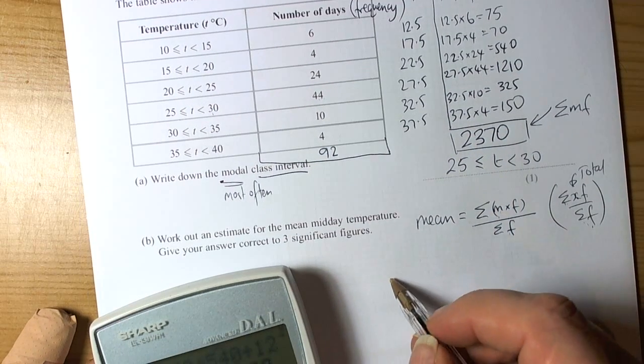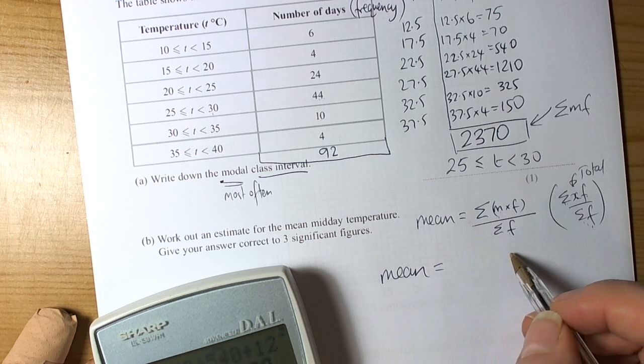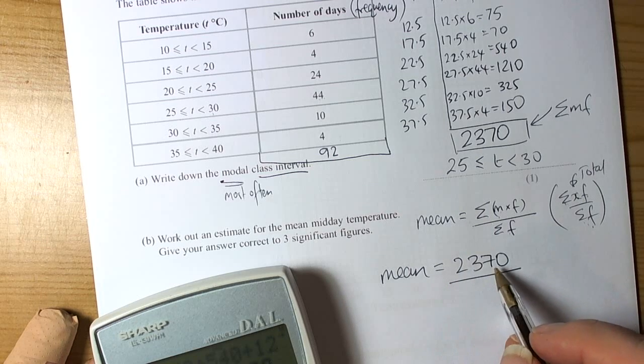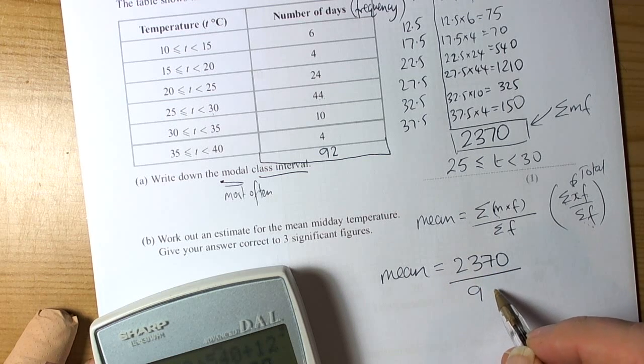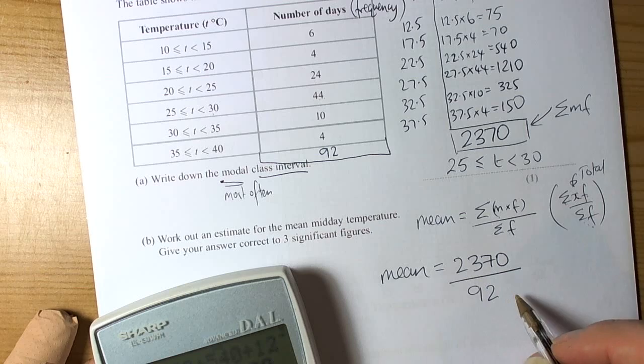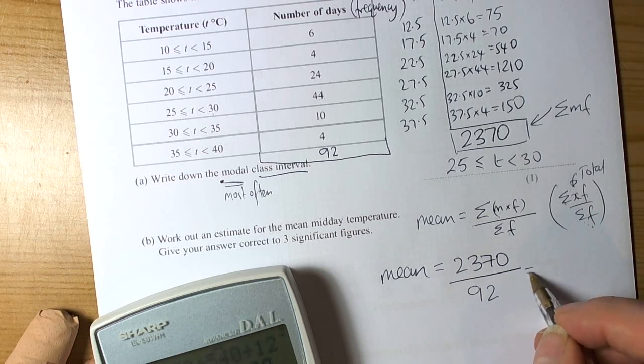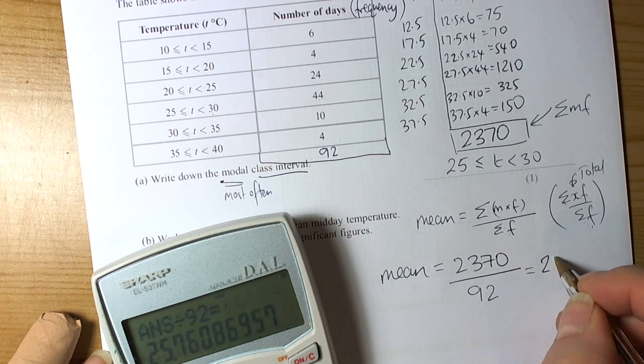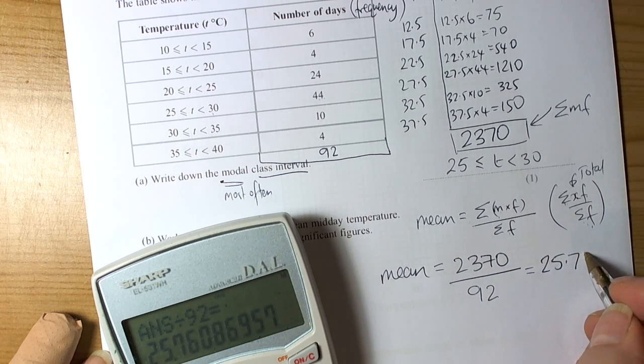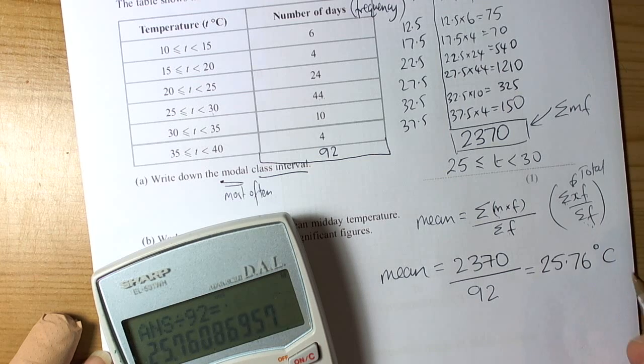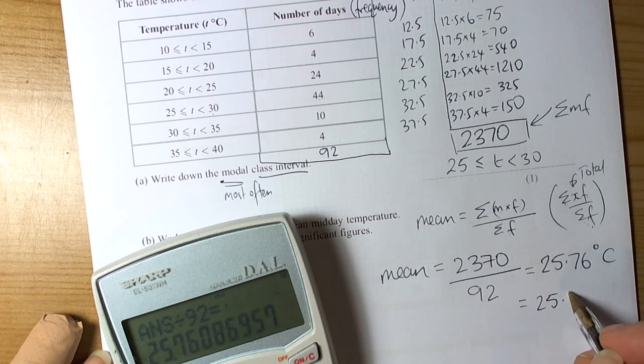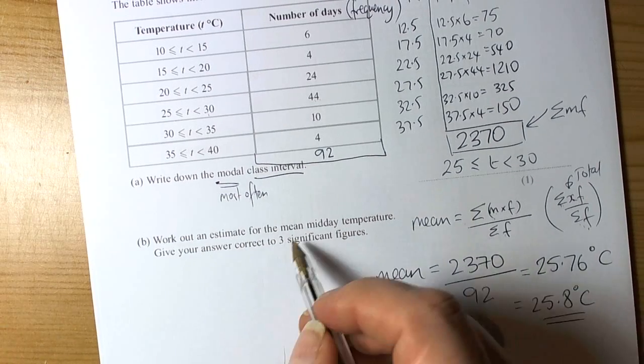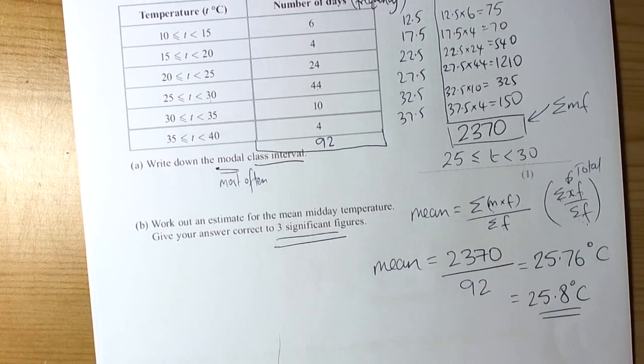So the formula says that for getting the mean, we need to know the total of all the temperatures, which was 2370 degrees. And we have to divide that by the number of days to get the average temperature per day, because the mean is the temperature per day. So we're going to do 2370 divided by 92, so we get an answer of 25.76 degrees C. And 3 significant figures is a good accuracy to use.